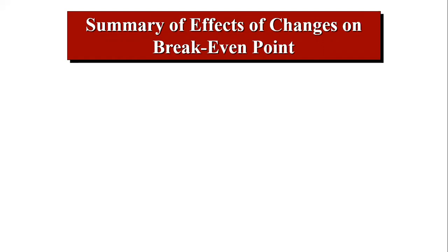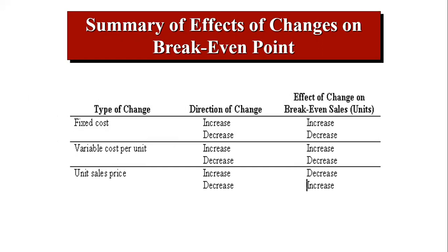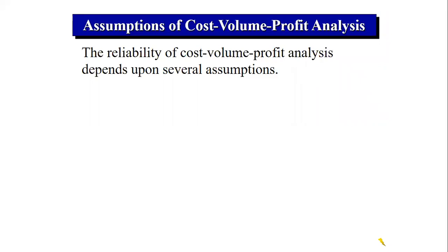Here is a summary of the effects of changes on the break-even point. If fixed cost increases, break-even sales increase; if fixed cost decreases, break-even decreases. If variable cost per unit increases, break-even increases; if it decreases, break-even decreases. For unit sales price, there is an inverse relationship — if price increases, break-even decreases; if price decreases, break-even increases. Take a screenshot and memorize this for multiple choice questions.